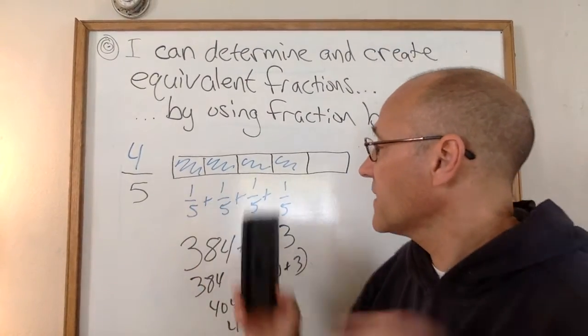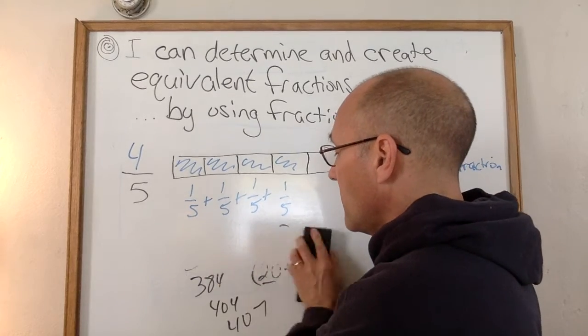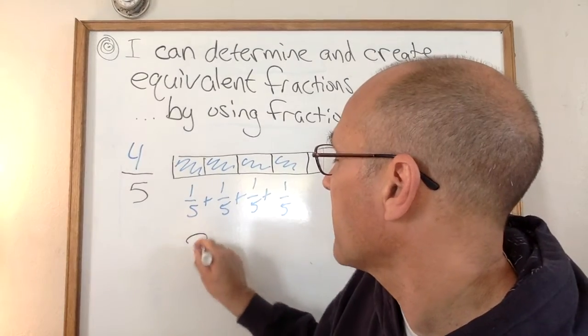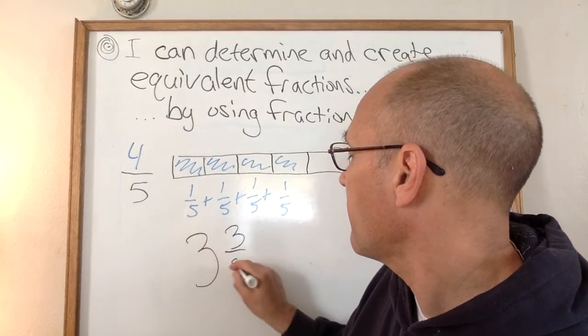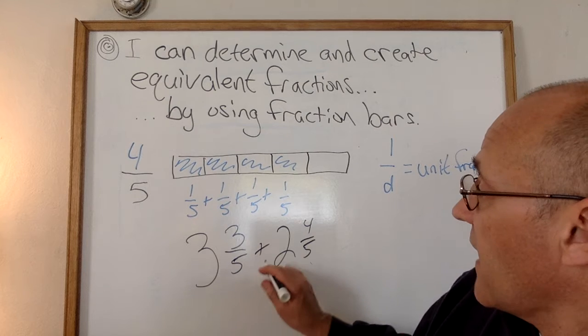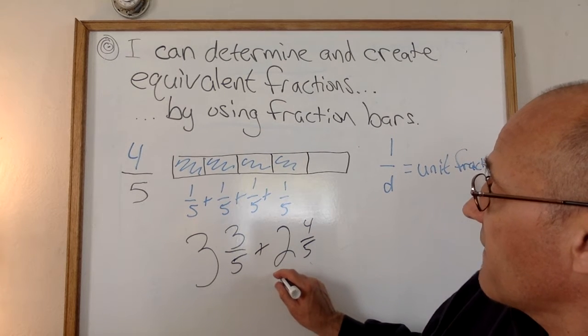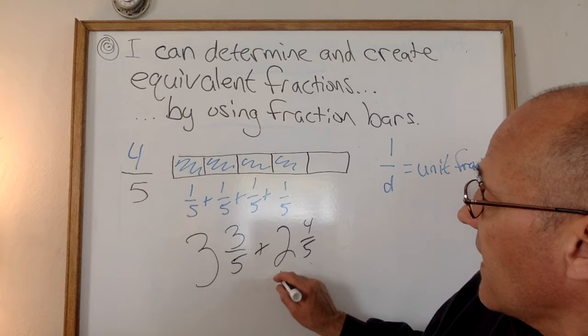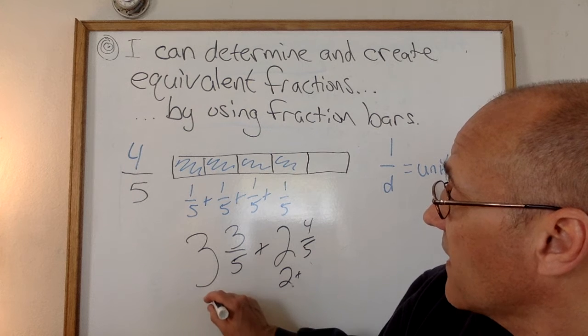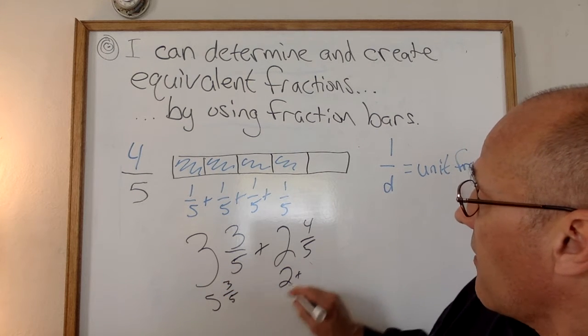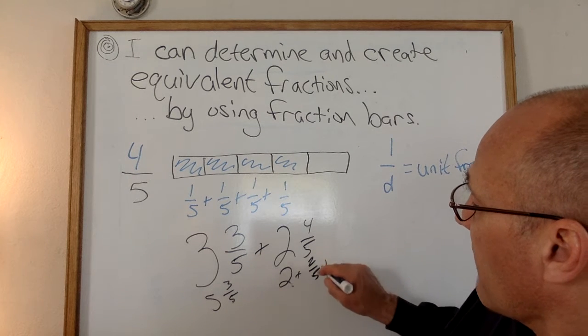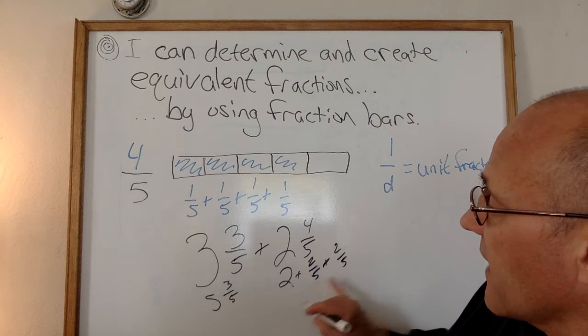That's why it's nice to know that a fraction is made up of unit fractions. Because later on you might be adding something like 3 and 3/5 plus 2 and 4/5 and you can add, I can think of the 2 and 4/5 as 2 plus so add the 2 to the 3 and 3/5 is 5 and 3/5. Now I need 2/5 to make a whole.